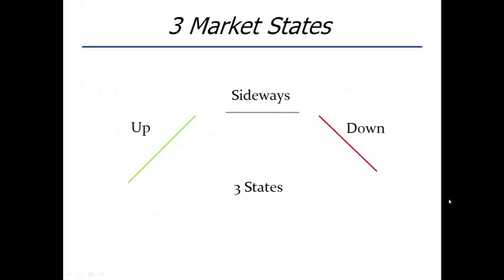People have a tendency to overcomplicate things in life, and Wall Street is one of the best illustrations of that phenomenon — to their detriment, people tend to overthink things. But successful investors and traders do the exact opposite: they simplify things in very simple terms, and there's a certain elegance in that simplicity. I always ask myself: what state is the market in? Is it up, sideways, or down? Within an uptrend, you can have sideways consolidation, and in a downtrend the same thing — it really depends on your time frame.